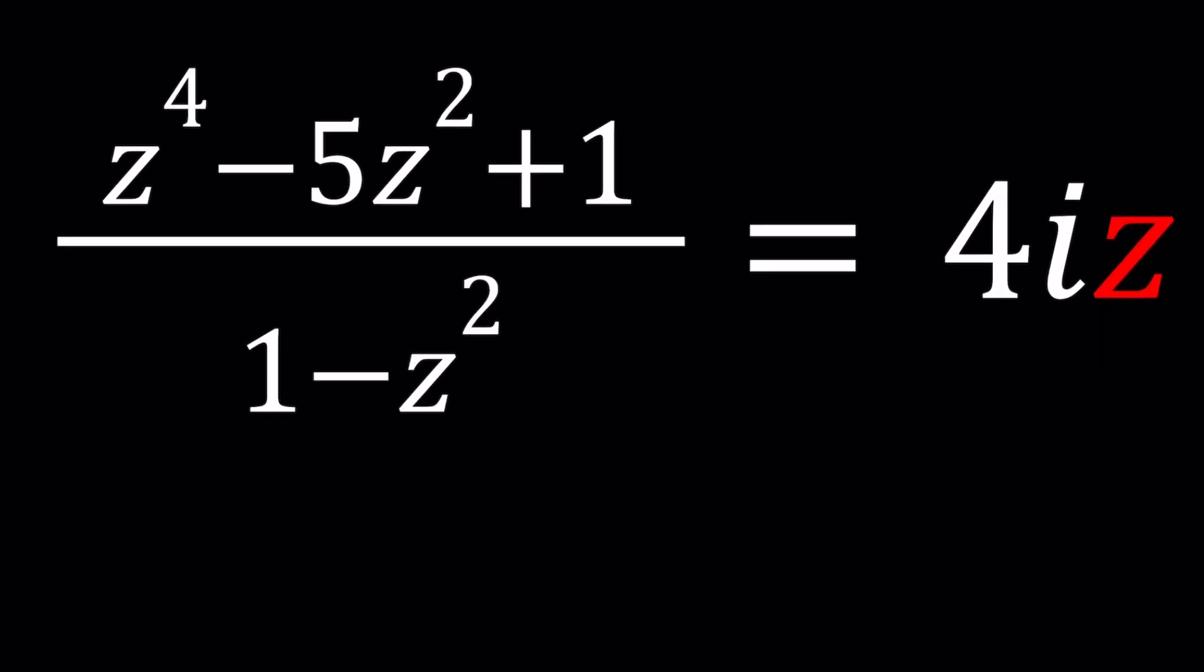Cross multiply. z to the fourth minus 5z squared plus 1 equals 4iz multiplied by 1 minus z squared, so it's going to be 4iz minus 4iz cubed.